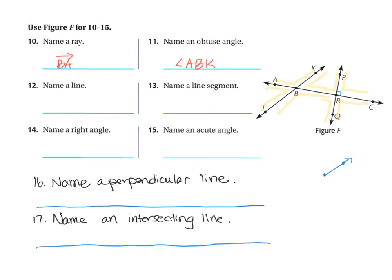On number 12, we have to name a line. There are three different lines. Remember, a line is going to have an arrow on both sides. My symbol for a line is a little line with arrows on both ends. I'm going to pick line JK. I don't need to include the middle connecting point — all I have to do is call it line JK, or I can do KJ — I can go either way.